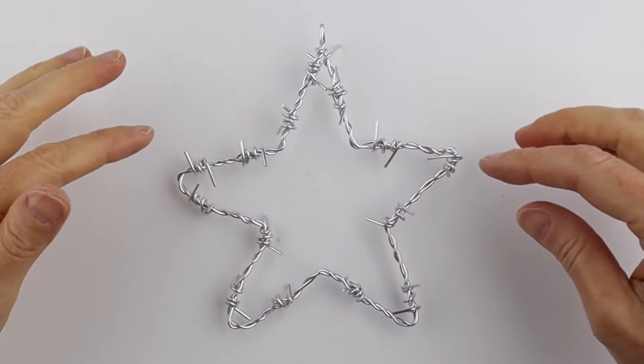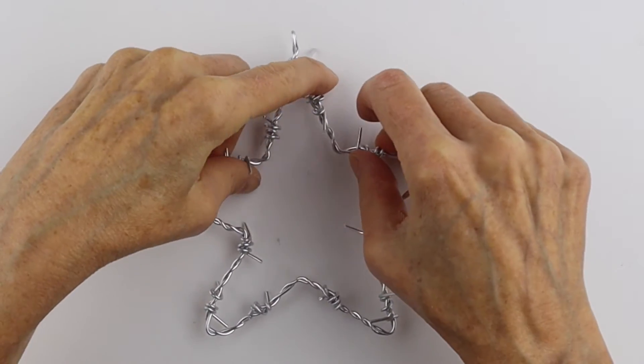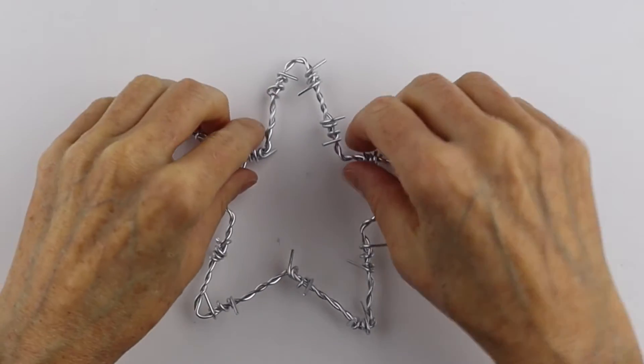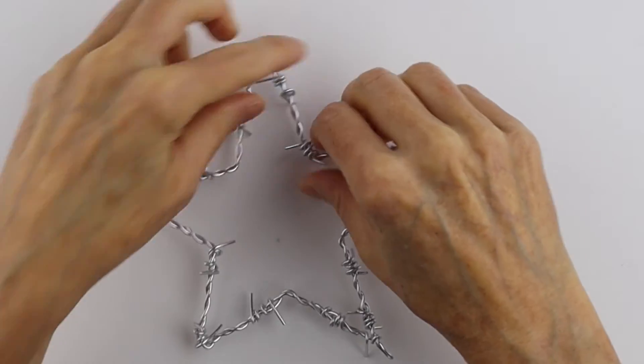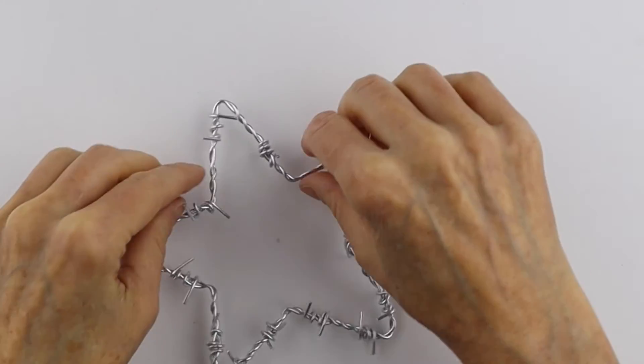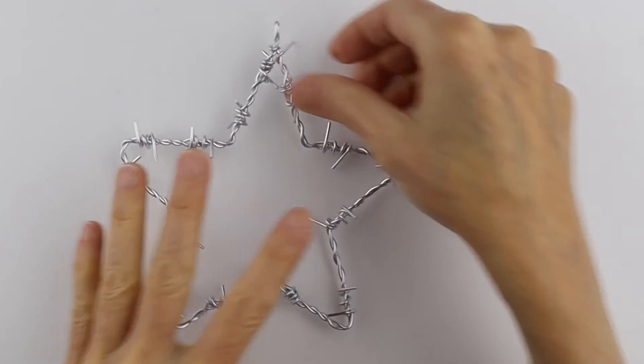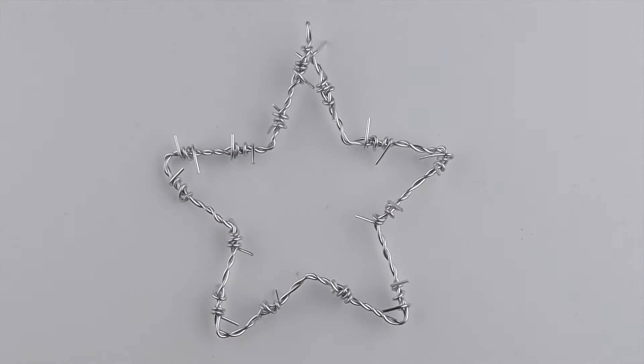I have a little hack to get the star in a nice shape. We just want to wiggle it around a little bit and imagine this is a straight line across here and this is straight, this is straight and this is straight just to get it a little bit somewhat symmetrical and there you have your barbed wire star and you can make any shapes at all that you like with this DIY barbed wire.